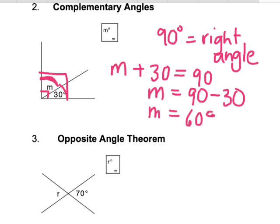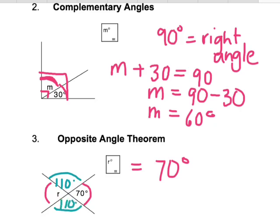Here we also have the opposite angle theorem. Any angle that's opposite another angle when they cross are equal. So R equals 70 degrees. If this angle is 110 degrees, the opposite angle would also have to be 110 because they're opposite.